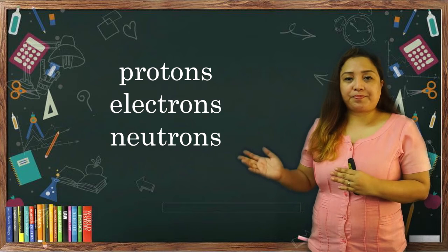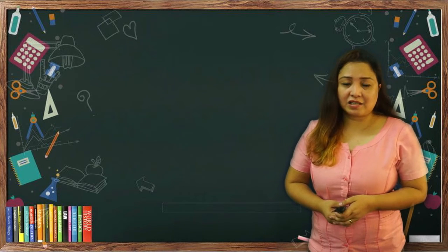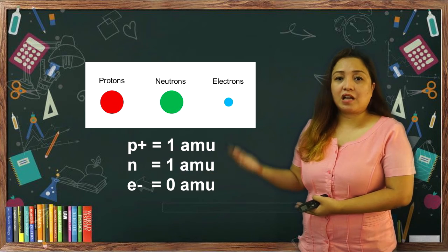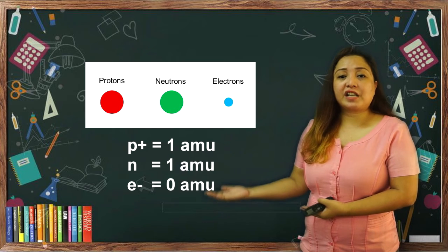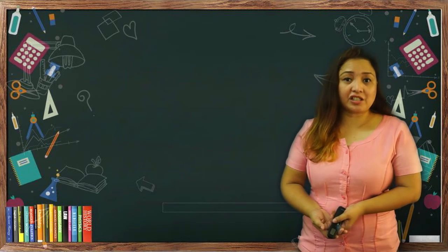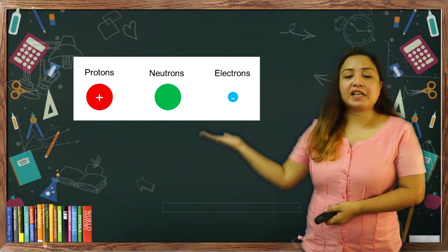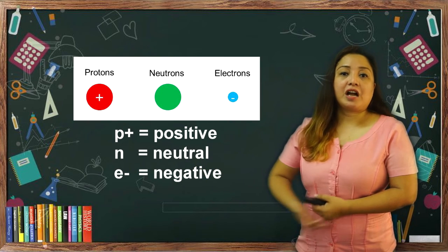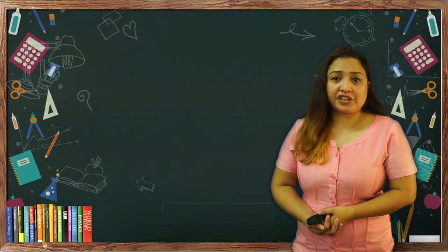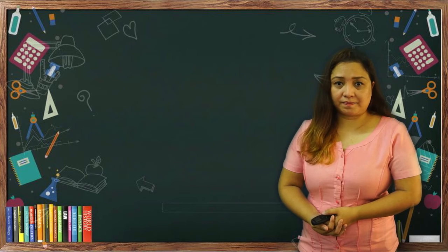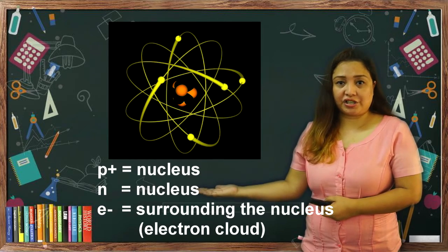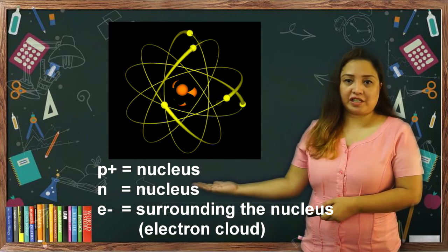Now, do these subatomic particles have the same relative mass? They are different because protons and neutrons have the same relative mass of 1 AMU (atomic mass unit), but electrons are much smaller with zero atomic mass unit. Now, what about their electrical charges? Protons are positively charged, electrons are negatively charged, but neutrons are neutral — they have no charge. What about location? You can always find protons and neutrons in the nucleus at the center, and electrons surrounding the nucleus in the electron cloud.